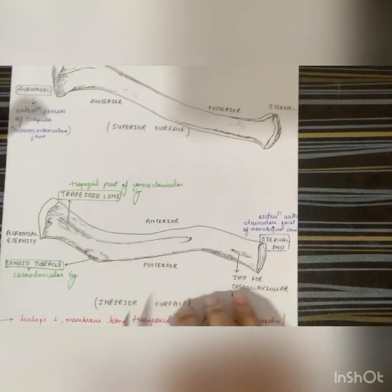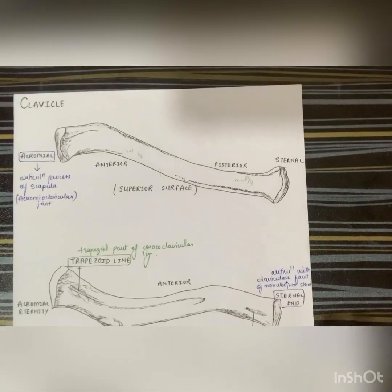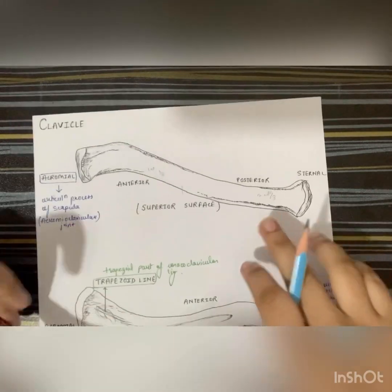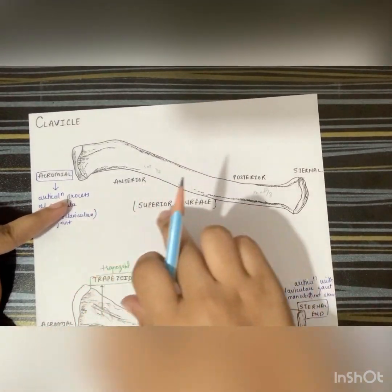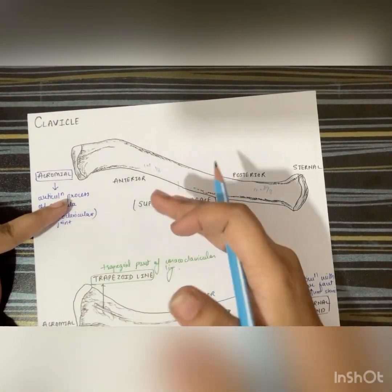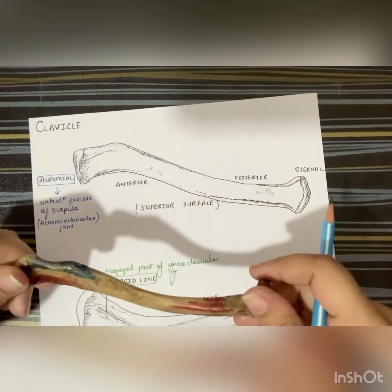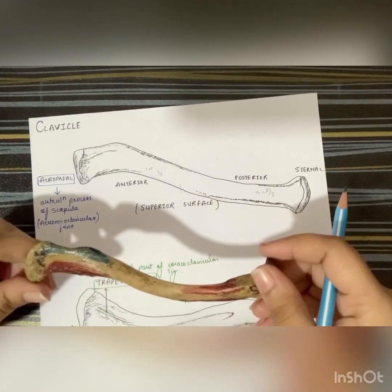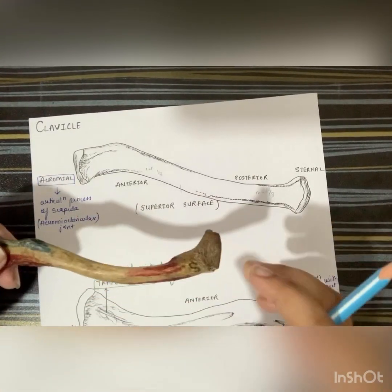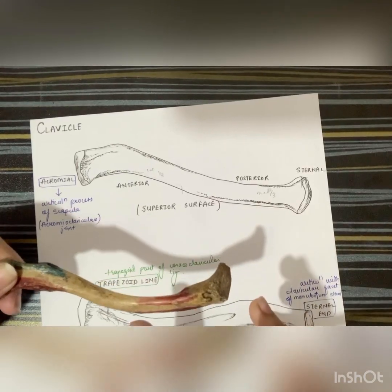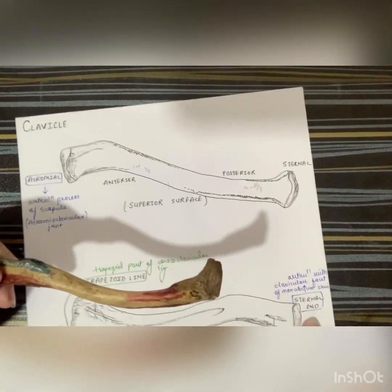Over here you can see the lateral one-third of the shaft, which is convex backward. The medial two-thirds of the shaft is convex forward.